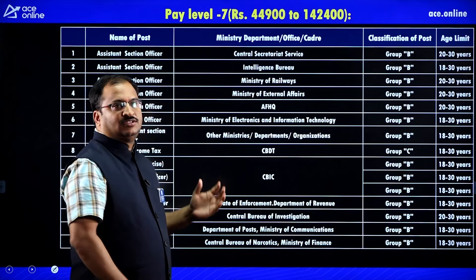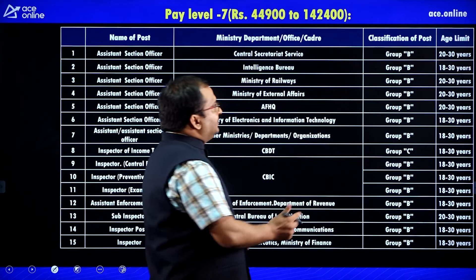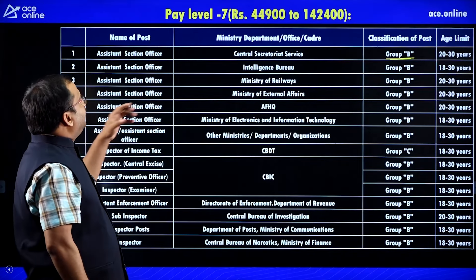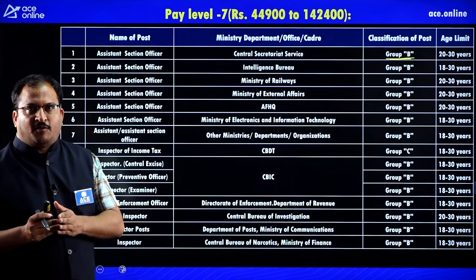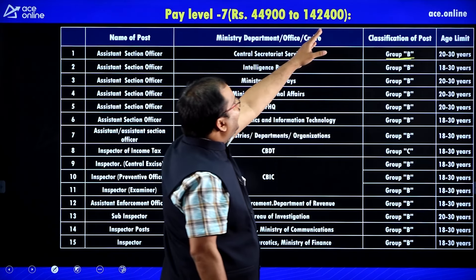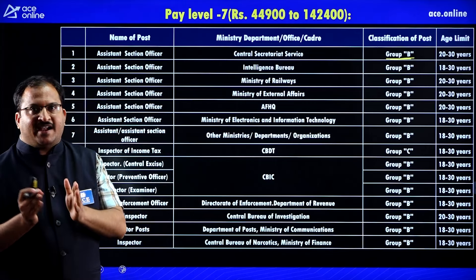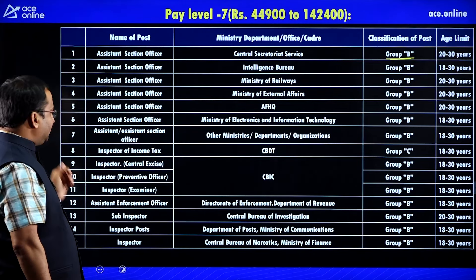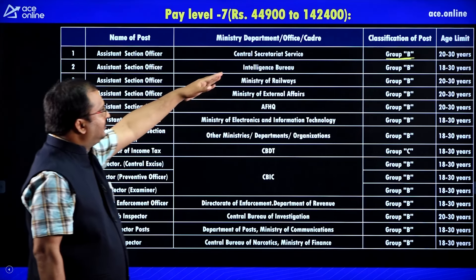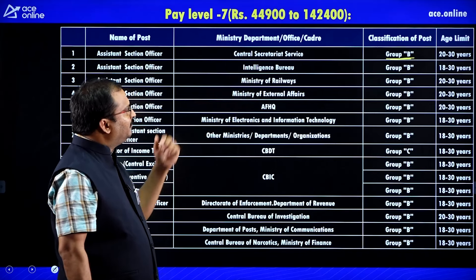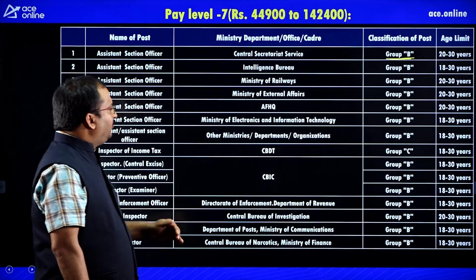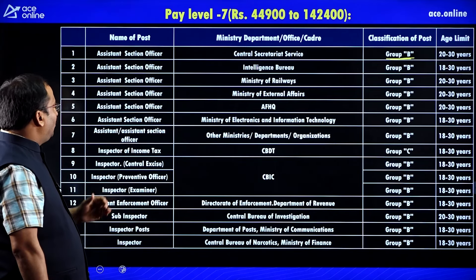Let us see what posts are available. Under Group B, Pay Level 7, the pay band is ₹44,900 to ₹1,42,400. Posts include Assistant Section Officer in various departments such as Central Secretariat Services, Intelligence Bureau, Ministry of Railways, Ministry of External Affairs, AFHQ, and Ministry of Electronics and Information Technology.